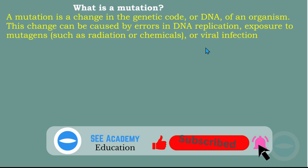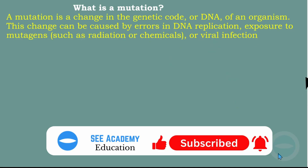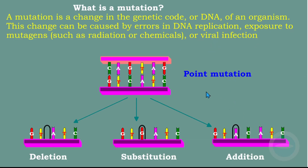We have different types of mutation. A point mutation is a genetic mutation where a single nucleotide has changed. So if there is a single nucleotide that changes, that process is called a point mutation.